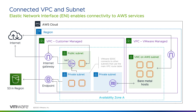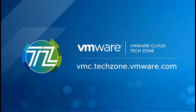Integrating your VMware Cloud on AWS infrastructure with AWS Native Services is a very powerful capability and may be beneficial if your applications or data protection solutions use S3 to store data. Be sure to visit VMware Cloud Tech Zone for the latest VMware Cloud on AWS resources.